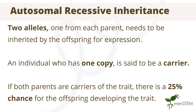Autosomal recessive inheritance is when two alleles are needed to be inherited for the development of a genetic condition. This occurs for conditions that contain a recessive allele; in order to express the condition, two copies of the recessive allele are needed. An individual who has one copy is said to be a carrier — in other words, they have the gene but just don't express it. If both parents are carriers, there is a 25% chance that the offspring will develop the condition.